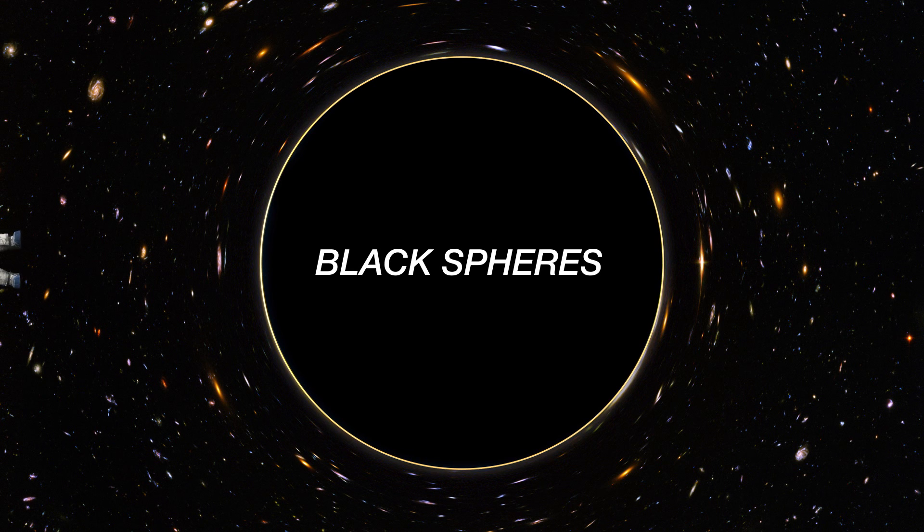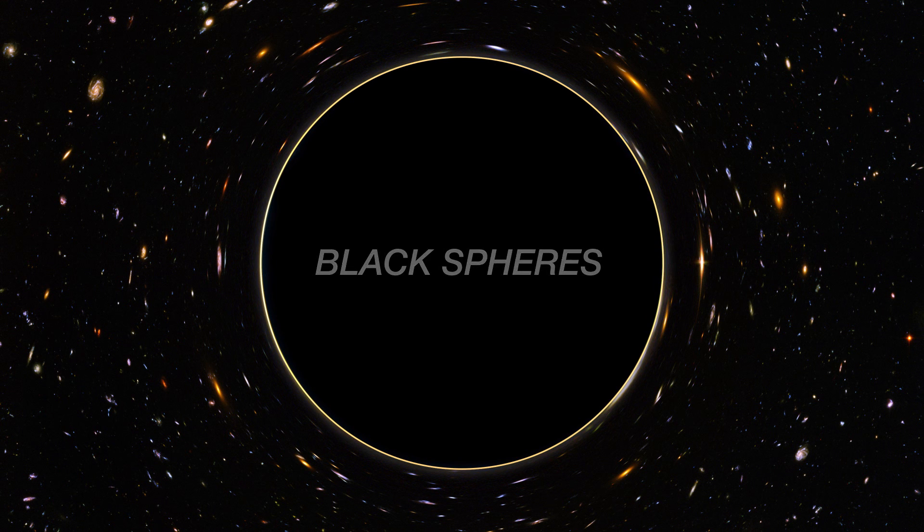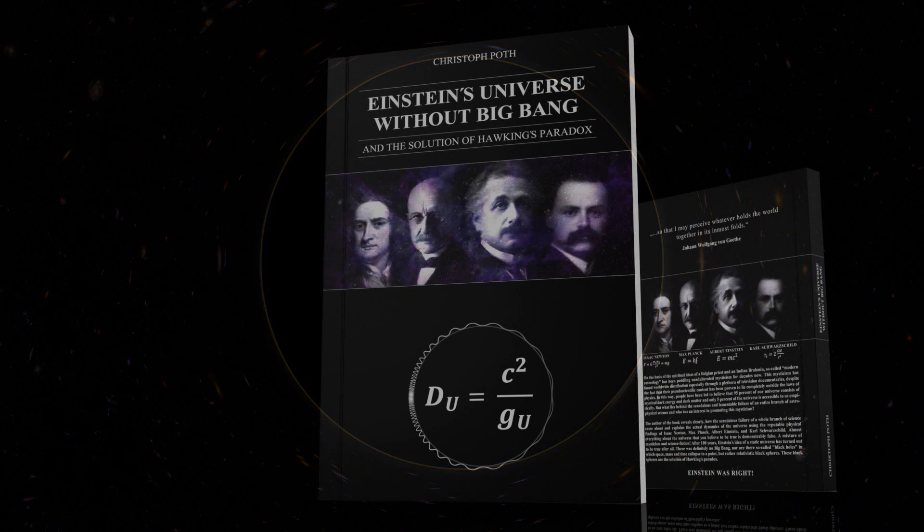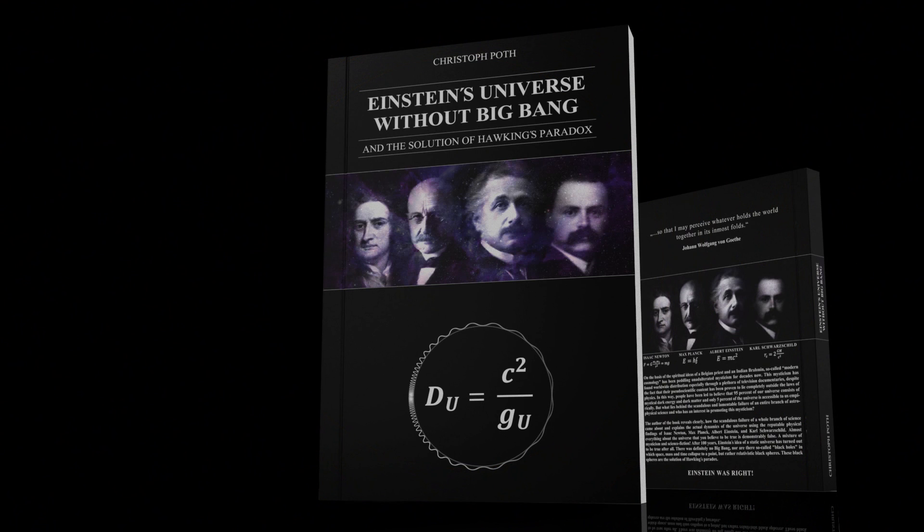Black spheres are not fictitious, but an observable phenomenon in the reality of our universe. In addition, they are the solution of Hawking's paradox. Learn more about this topic in the book Einstein's Universe Without Big Bang and The Solution of Hawking's Paradox.